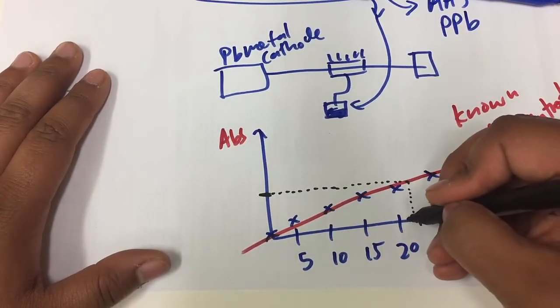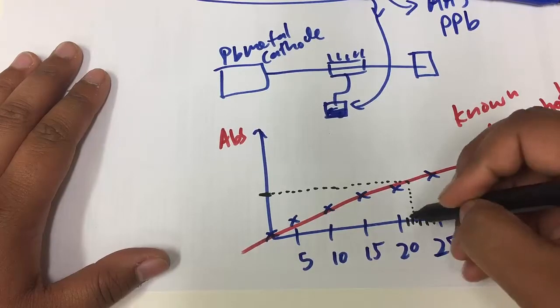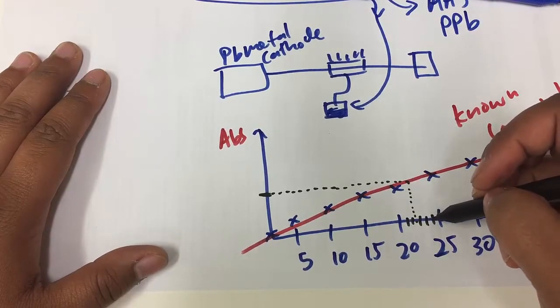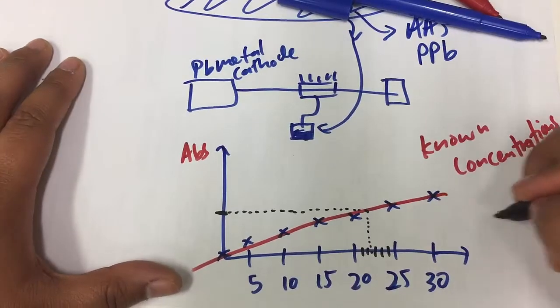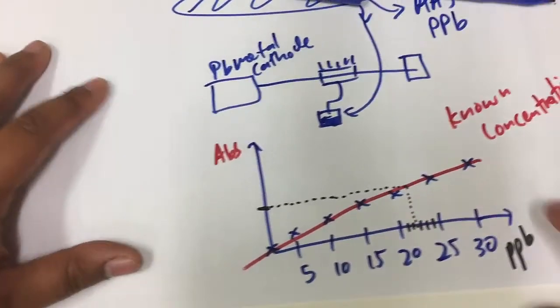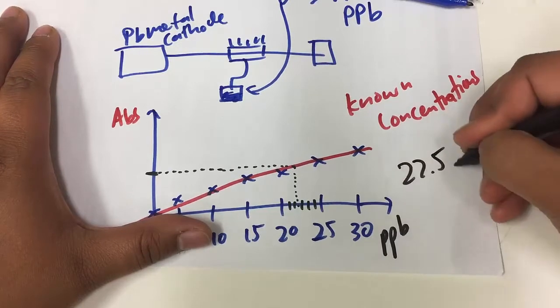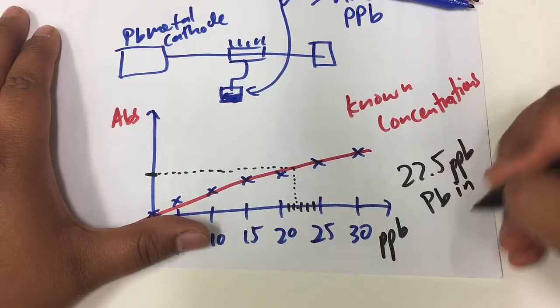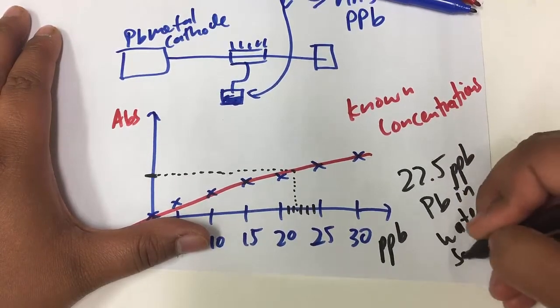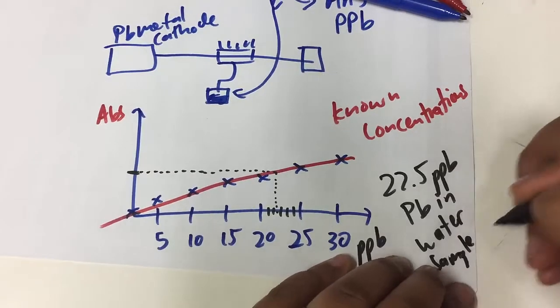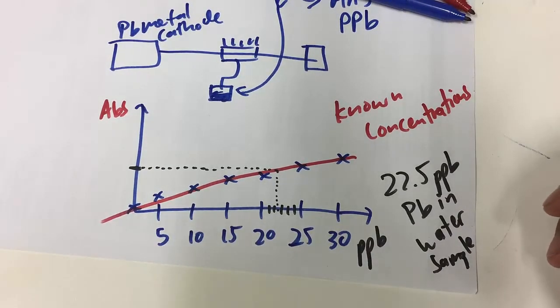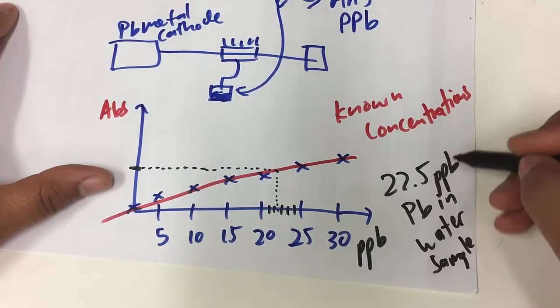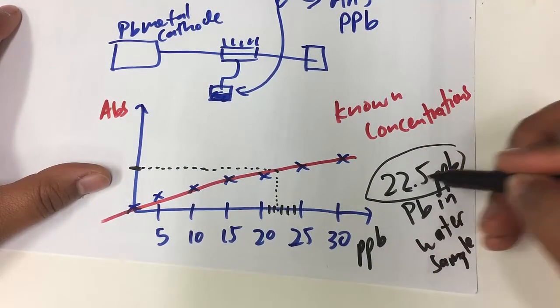Go down. Okay. Well, let's have a look. Well, it's approximately maybe 22.5. Oh, and sorry, this is in PPB. So the concentration was about 22.5 PPB of lead in that water sample.